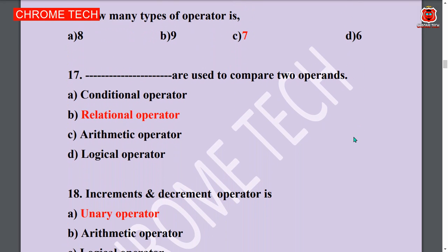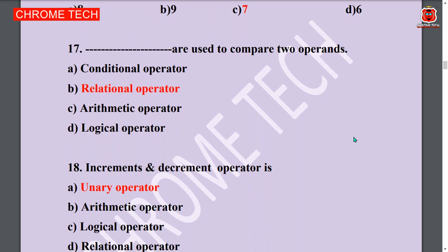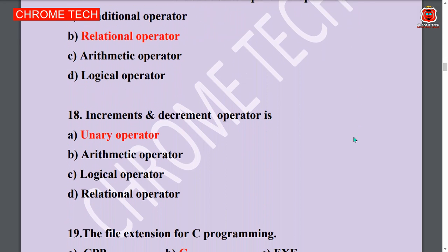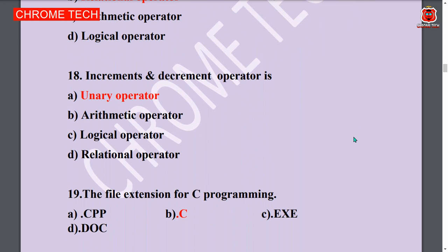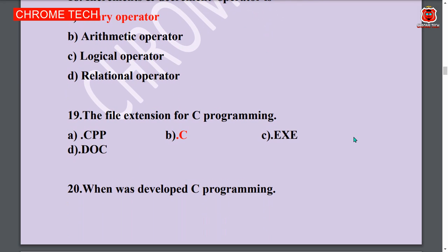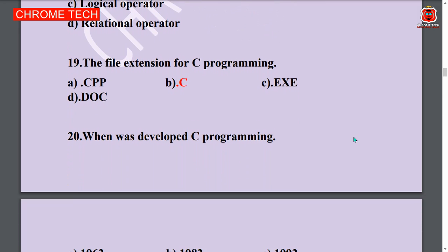Next question: Dash are used to compare two operands. Relational operator is the answer. Option B is the answer. Eighteenth question: Increment and decrement operator is unary operator. Option A is the answer. Nineteenth question: The file extension for C programming is .c. Option B is the answer.